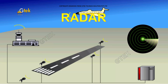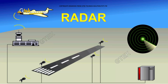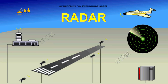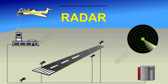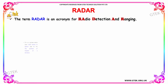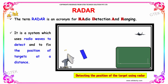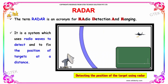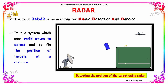Radar is one of the interesting areas in the field of communication. The term radar is an acronym for radio detection and ranging. It is a system which uses radio waves to detect and to fix the position of targets at a distance.